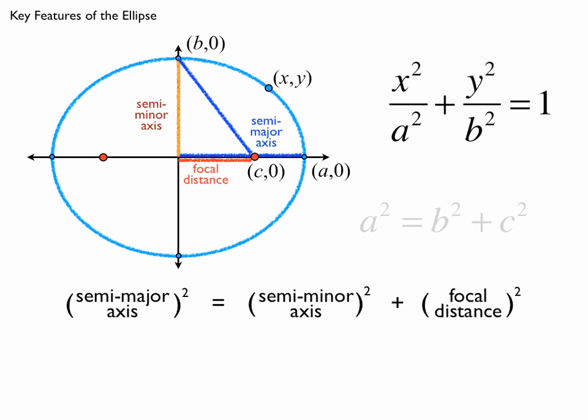So perhaps the more important way to think about this is that the semi-major axis squared is equal to the semi-minor axis squared plus the focal distance squared. Then you can't go wrong. As long as you've identified these three quantities, you just plug them into this relationship.